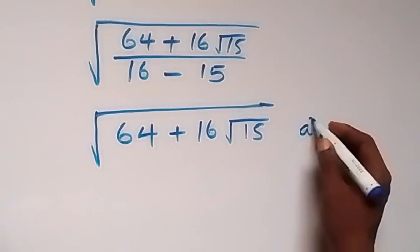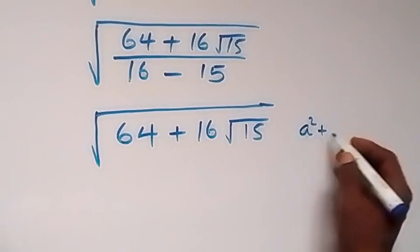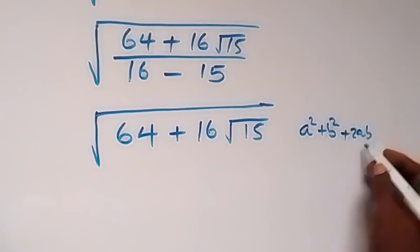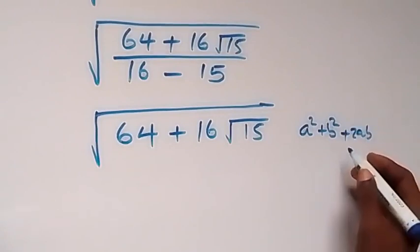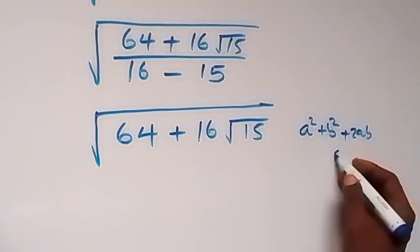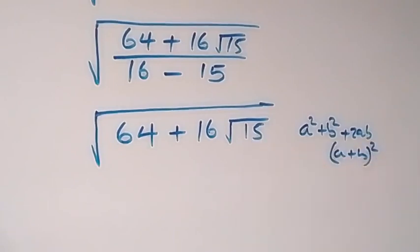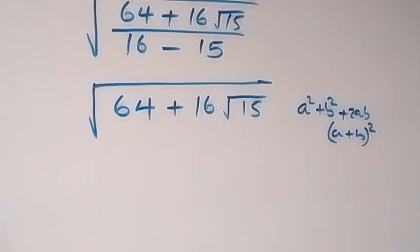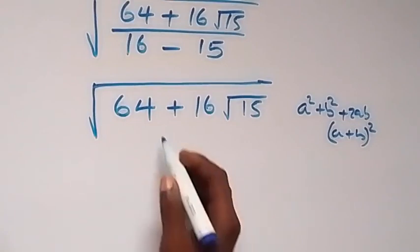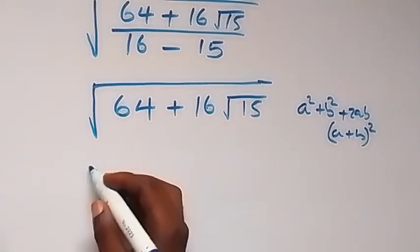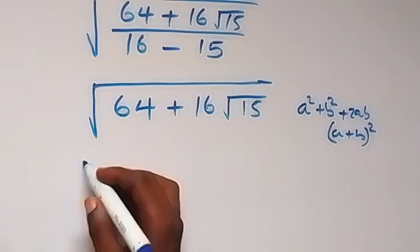We want to rewrite this in the form a² + b² + 2ab, which equals (a + b)². So let's work through that. We can rewrite 16 here as 2 times 8.